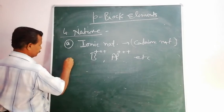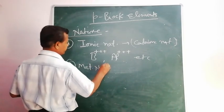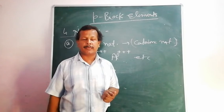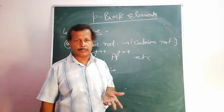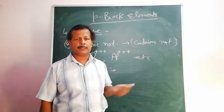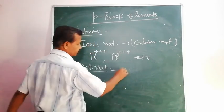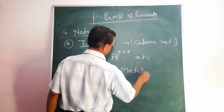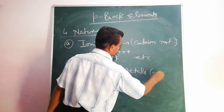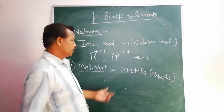Second: metallic nature. In general, all these elements show metallic character except Boron. Boron shows both metallic and non-metallic character, so Boron is a metalloid. All others like Aluminium, Gallium, Indium, etc. are metals.